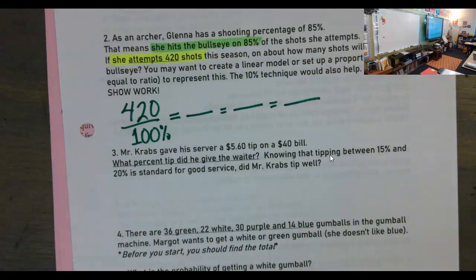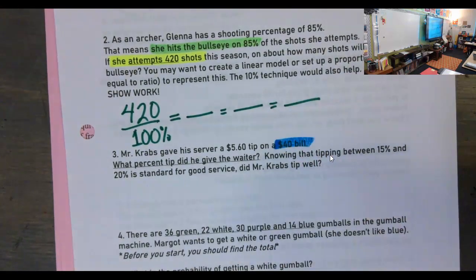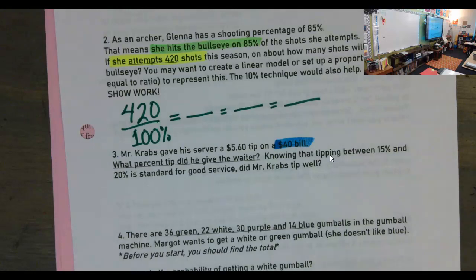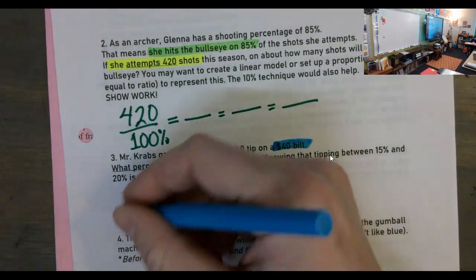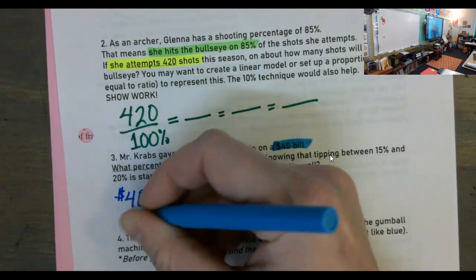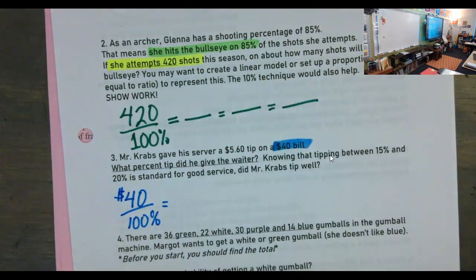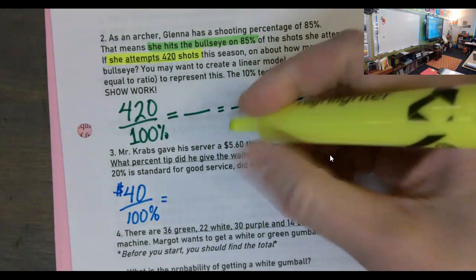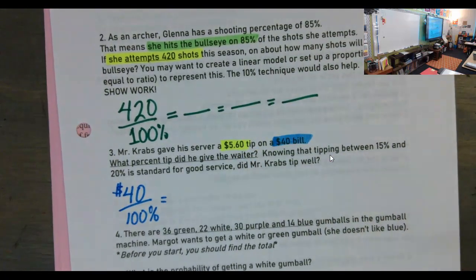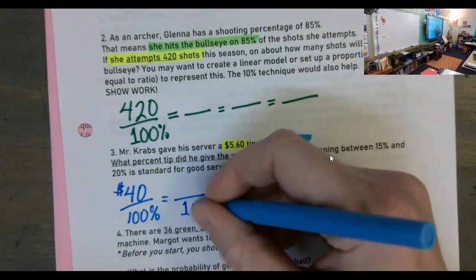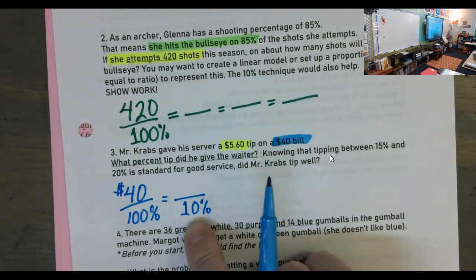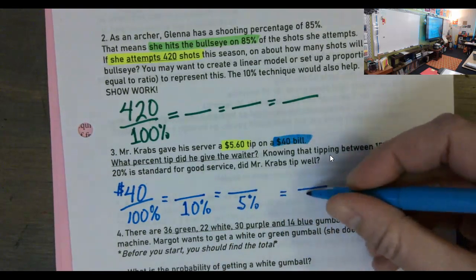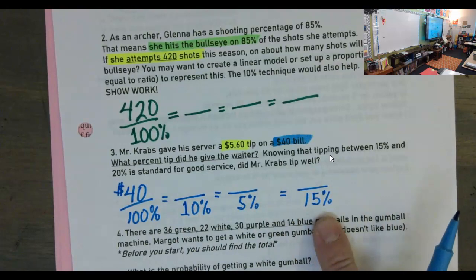Moving on. Number three, Mr. Krabs had a $40 bill. Not like a piece of paper. Like that's the thing he has to pay. If that's the amount they drop on your table and tell you you have to pay, what percent is that $40? 100. That's your 100%. So you could also start this problem setting up a proportion of your $40 is your 100%. Now you could also just try to figure out what percent is $5.60. Or you could work this, I don't necessarily want to say backwards, but it's kind of backwards because we're going down. You could figure out what's 10%, what is 5%, if I know those, what is 15%? Did he tip that much or not?